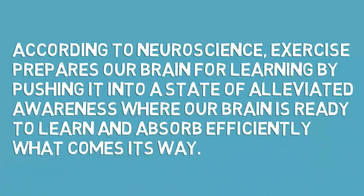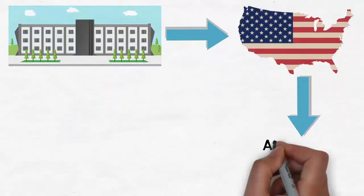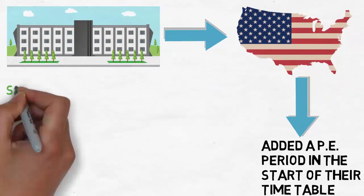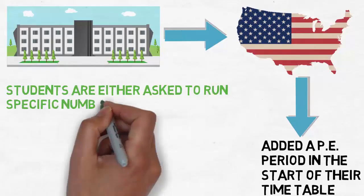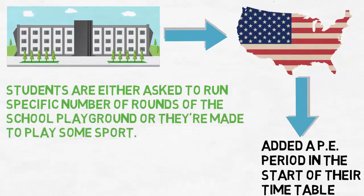Many schools in the United States of America have added a physical education period at the start of their timetable. Students are either asked to run a specific number of rounds of the school playground or they are made to play some sport.